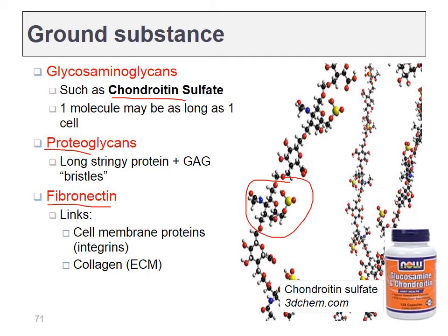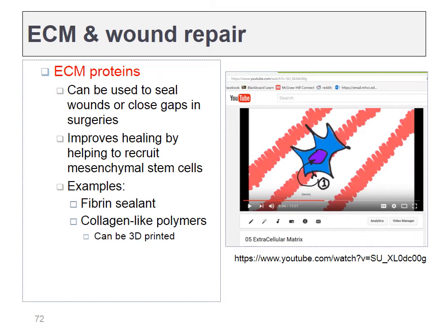Fibroblasts also secrete ground substance — a gelatinous material similar to Jello that absorbs shock and prevents movement of viruses and bacteria through the spaces. Ground substance is made of glycoproteins, including glycosaminoglycans such as chondroitin sulfate, proteoglycans, and the fibronectin family. These large glycoproteins absorb and retain water. Jello is essentially dehydrated glycoproteins — ground substance from an animal with all the water removed — and when water is added, it gels up, just as in the human body.